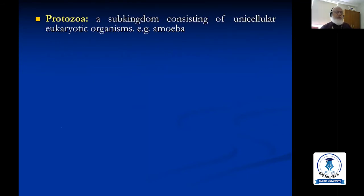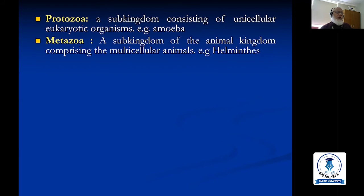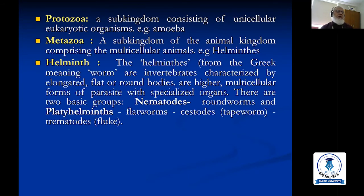Protozoa: a subkingdom consisting of unicellular eukaryotic organisms. 'Proto' means ancient, 'zoa' means animal. Metazoa: a subkingdom of the animal kingdom comprising multicellular animals like helminths.